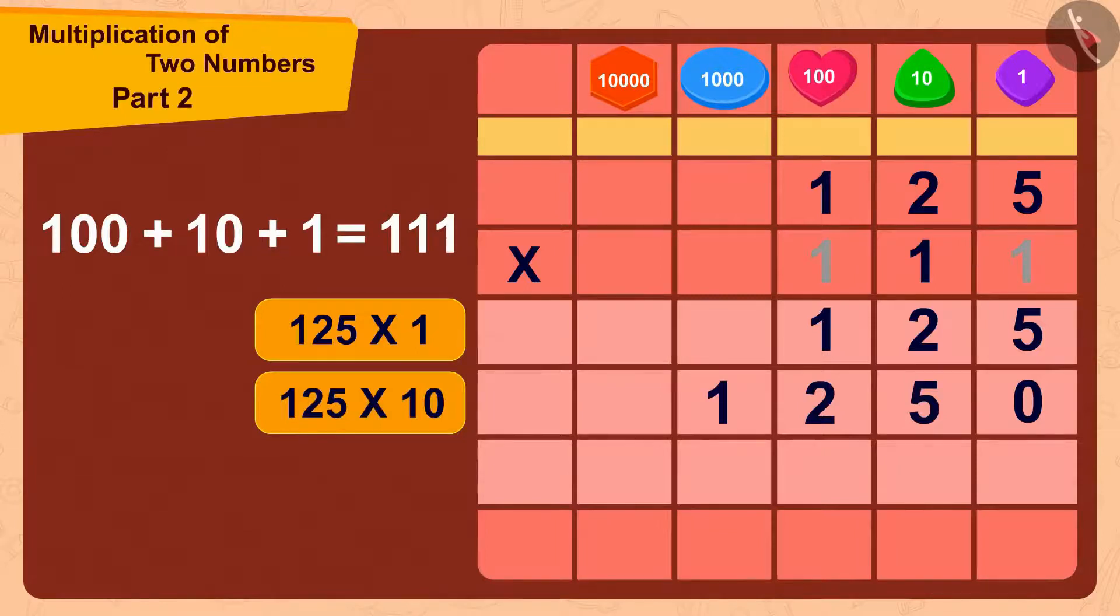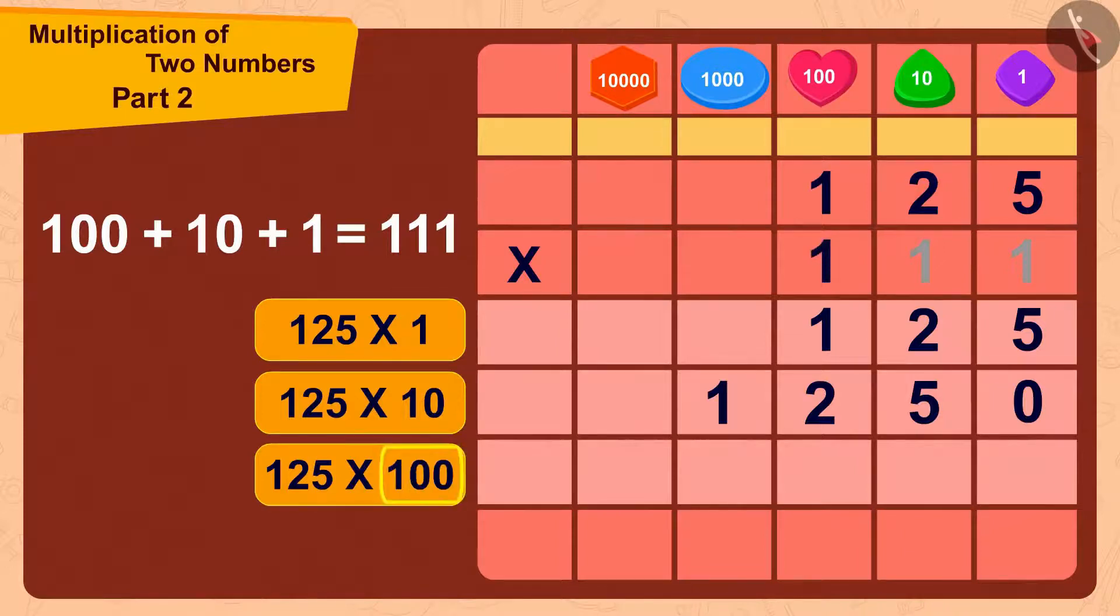Now we just have to multiply 125 with 100. Because there are two zeros in 100, we will first write two zeros. And now we just have to multiply 125 with 1.